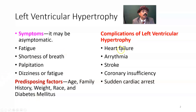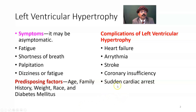Complications include heart failure — mostly congestive heart failure — arrhythmia, and stroke. Coronary insufficiency occurs because the coronary arteries arise from the ascending aorta, and due to left ventricular hypertrophy, the coronary arteries may not get a sufficient amount of blood. Sudden cardiac death is another complication of left ventricular hypertrophy. Prevention is achieved by management and monitoring of blood pressure.